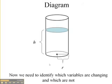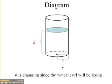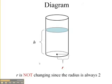Now we need to identify which variables are changing and which are not. h is changing because the water level is going to be rising. So h we need to keep as a variable. r, the radius, is not changing in this case because we have a cylinder. So it's always going to be 2. Now if we had a cone, we'd have a different case. But since it's a cylinder, our radius is not changing.